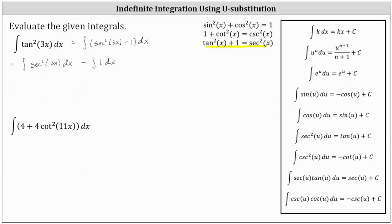Let's set up the u substitution for the first integral, where u is going to be equal to the inner function of 3x. So if u is equal to 3x, differential du is equal to the derivative of 3x times dx, which is 3dx. We don't have 3dx as part of the integral, so let's divide both sides by three to solve for dx. Simplifying, we have one third du equals dx. We can now substitute u for 3x and one third du for dx.